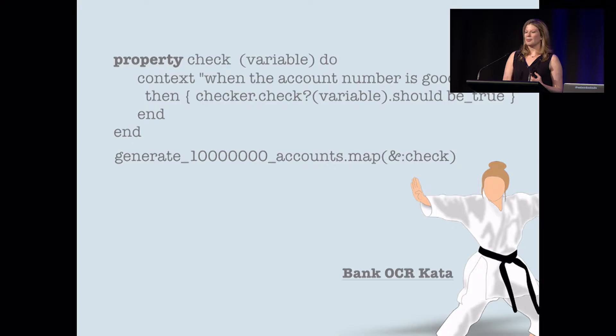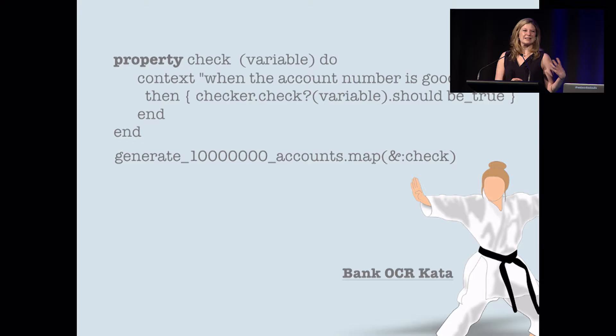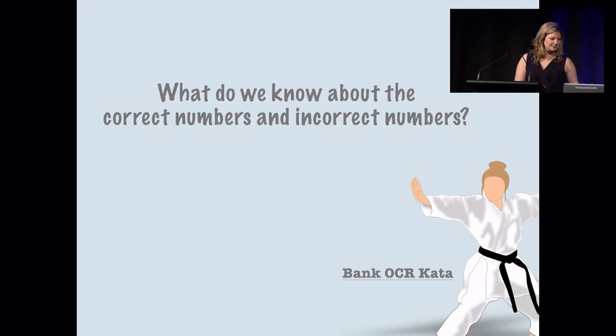So what if we could write something that would run all valid accounts through our checker — maybe 10 million of them — 10 million unit tests to give me confidence in my code? I would be generating input to my tests. Why can't I generate input to my tests? Because I've been told it's bad. Generating input for unit tests is a bad practice — not the way you're supposed to write unit tests. But with property-based tests, I start breaking rules, and that makes me feel good too.